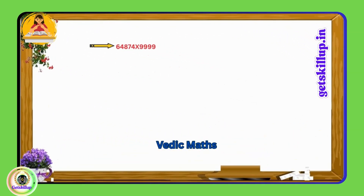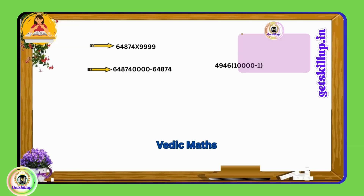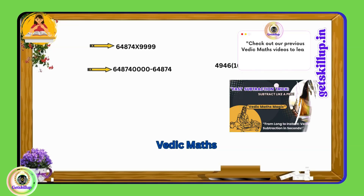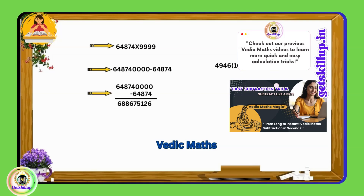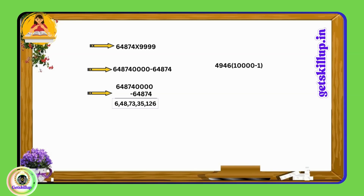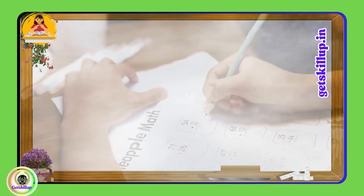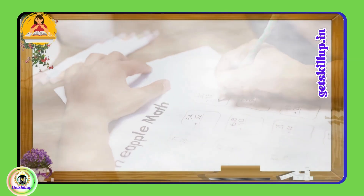Let us take one more example. To multiply 64874 by 9999, we simply add 4 zeros to the right of the number, making it 648,740,000, and then subtract 64,874. We get 648,735,126 as the result. By utilizing this technique, multiplication with 9s becomes simpler and can be done swiftly without extensive calculations.